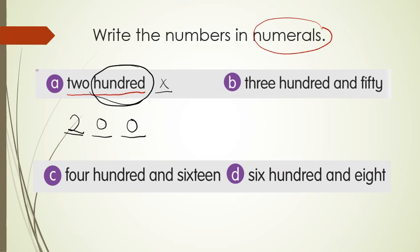Look at the second example B: three hundred and fifty. Again, you need three digits here. The number is three hundred — hundred is in front — and fifty. How to write fifty? Fifty is five, zero — so the answer is 350.